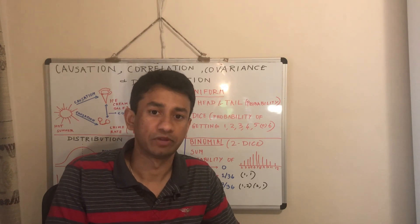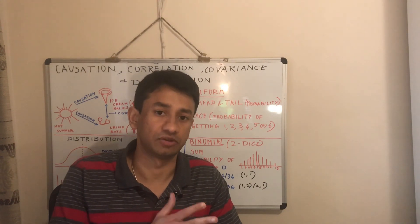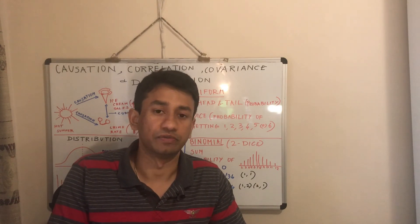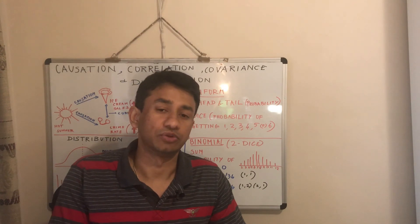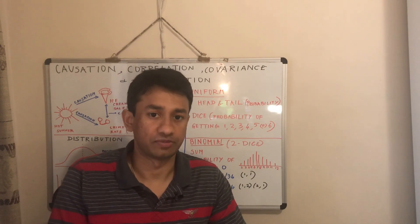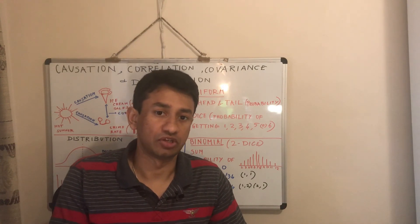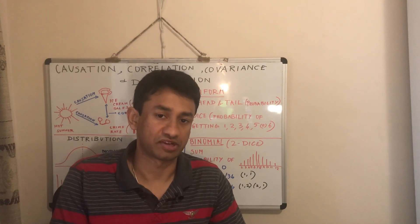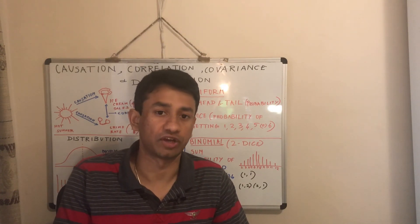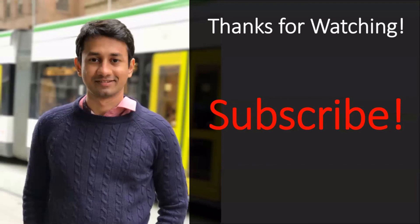That's it about today. We saw the difference between causation and correlation, and the difference between correlation and covariance, and the importance of having them. Also, we ran through the three different distributions with examples for uniform as well as binomial distribution. I hope you have learnt something new today. If you have, please give a thumbs up and subscribe to my channel. If you think this might be helpful for any of your friends, please feel free to share it with them. Bye for now, see you in the next session.